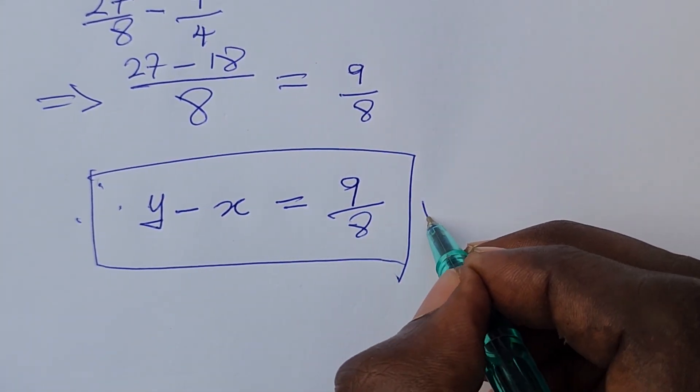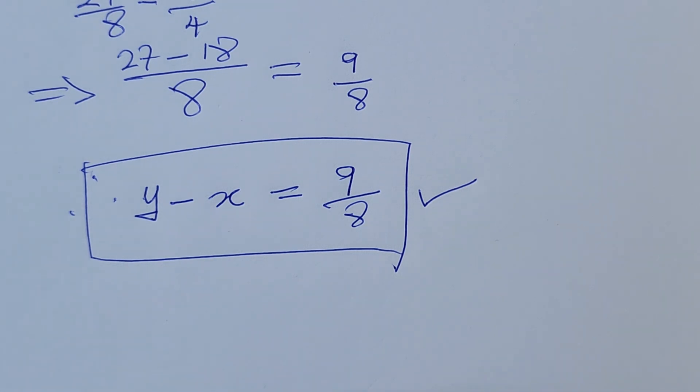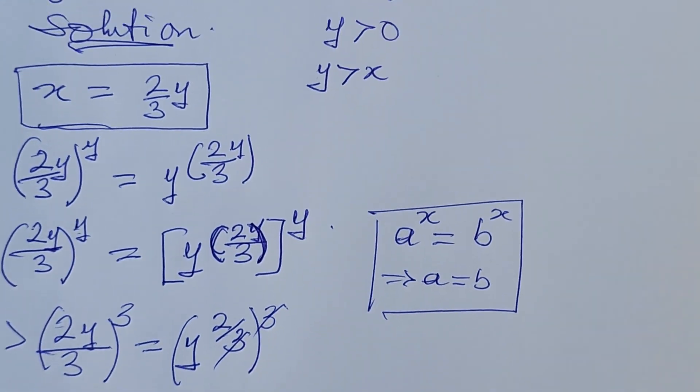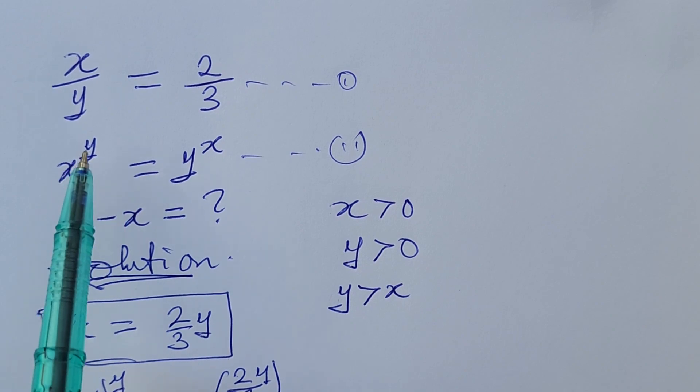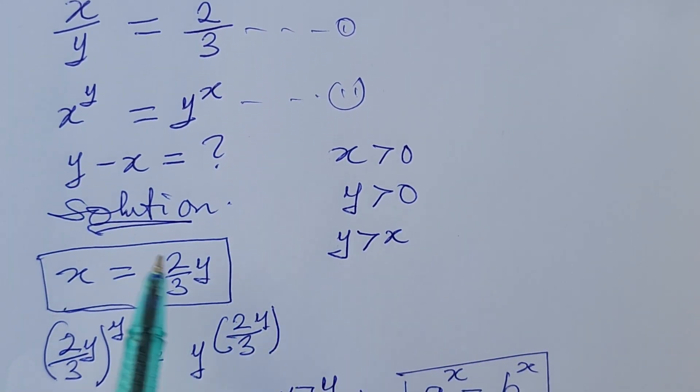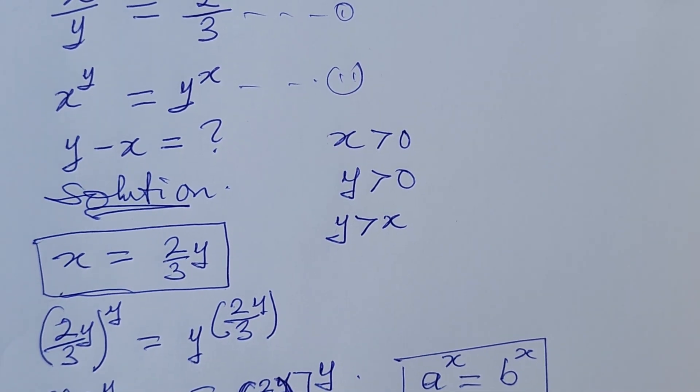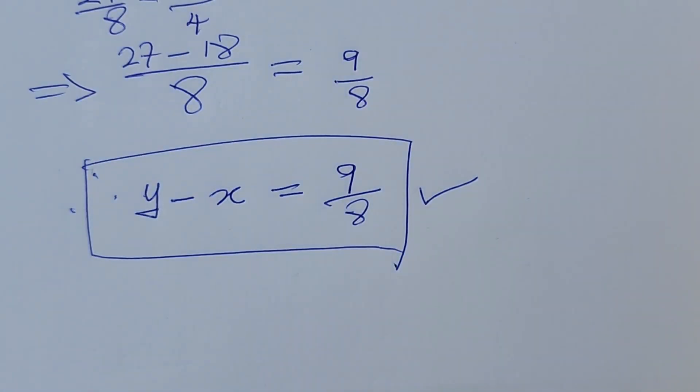As easy as ABC. So this is the value of our y minus x as given in the question. Our original equation, we have x over y equal to 2 over 3 and x to the power of y equals y to the power of x. So we succeeded in looking for y minus x as given in the question. This marks the end to this simple challenge.